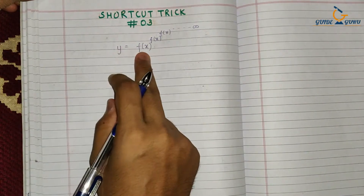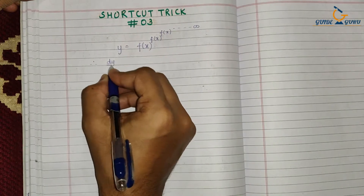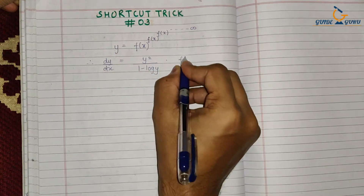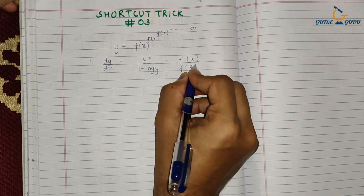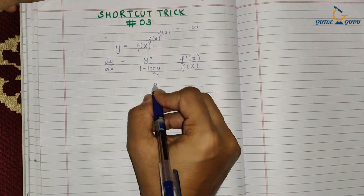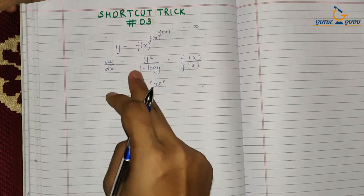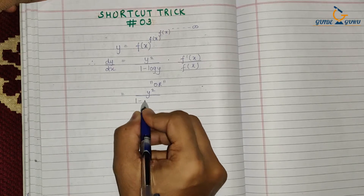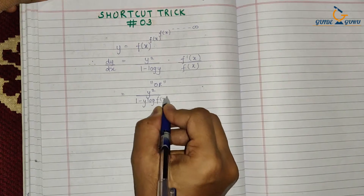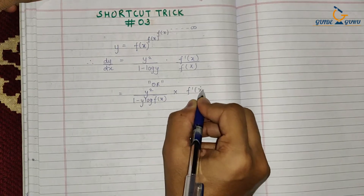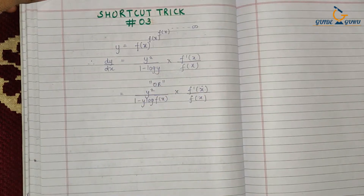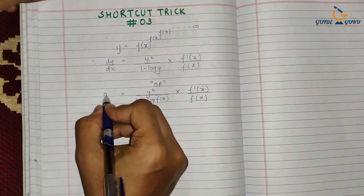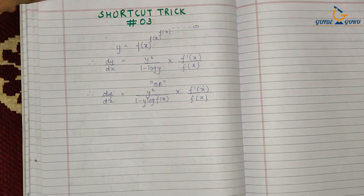In order to find the derivative of this infinite series, the shortcut is: dy/dx is equal to y² upon (1 − log y) into f'(x)/f(x). Alternatively, if you do not find a matching answer in the options, you can also use: y² upon (1 − y·log f(x)) into f'(x)/f(x). In entrance exams you may find the answer in either form, so remember both.